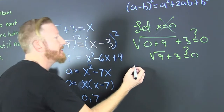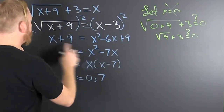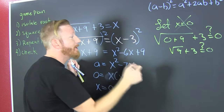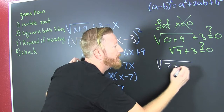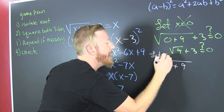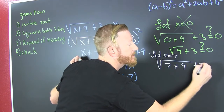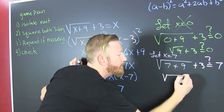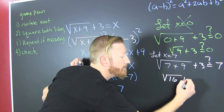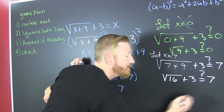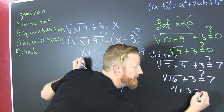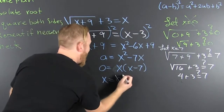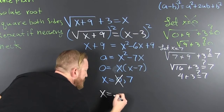Now let's check seven. Let x equal seven in the original: the square root of seven plus nine, plus three. Does that equal seven? The square root of 16 plus three equals seven? Does four plus three equal seven? Yes! On a good day. We do have one solution: x equals seven.